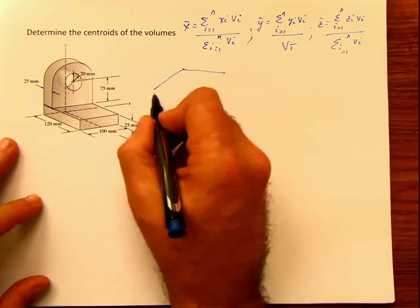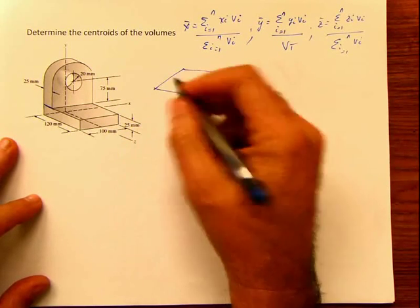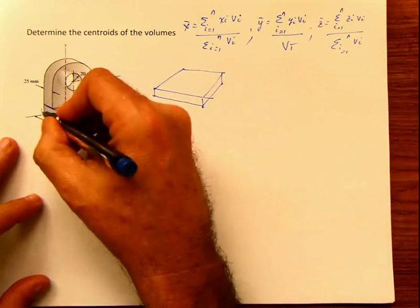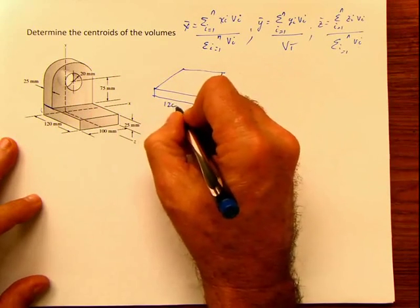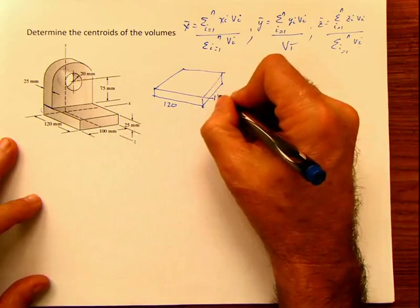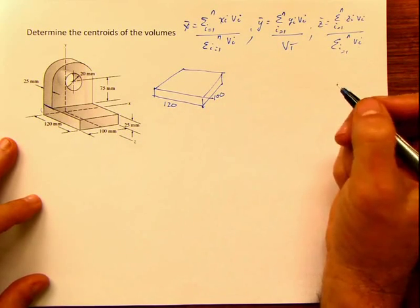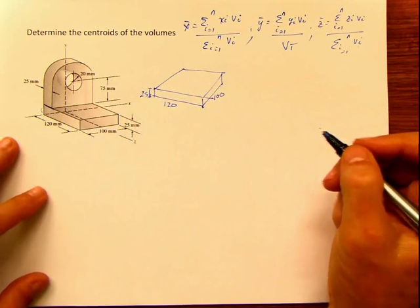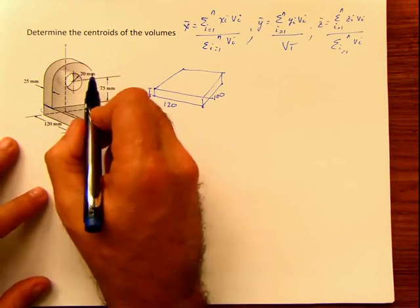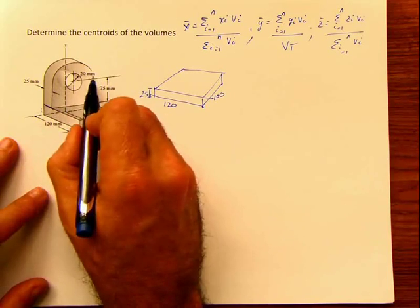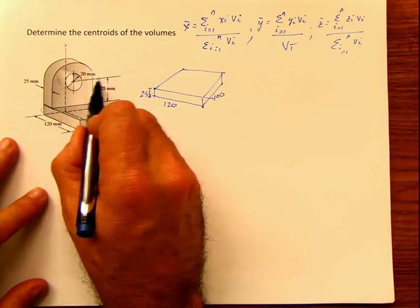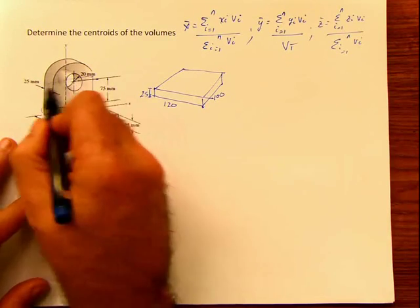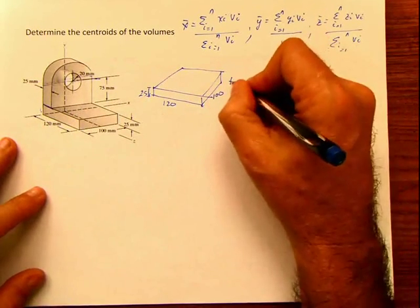The first figure is going to be the base — 120 millimeters by 100 millimeters, and the height is 25. That's the first part. The second part goes up to the center, before the arch of the circle — I'm going to add that.